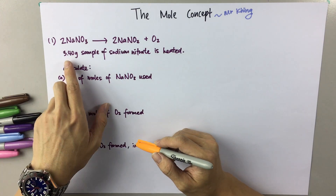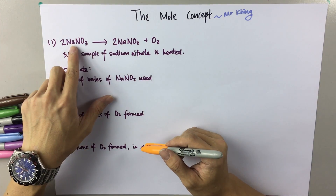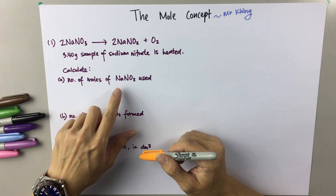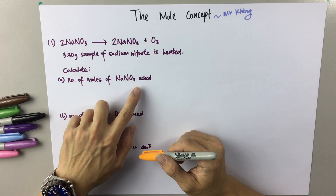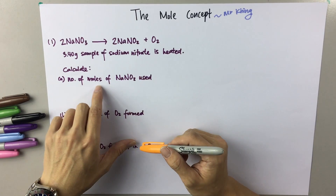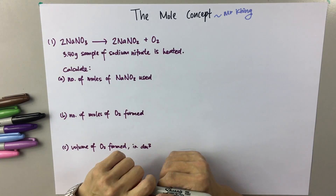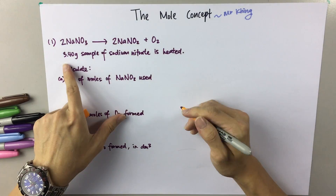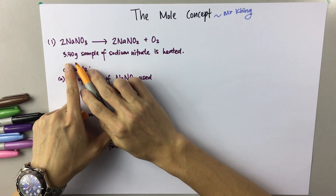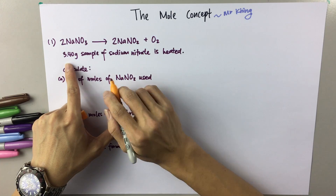Given the information: a 3.4 gram sample of sodium nitrate is heated. Calculate the moles of sodium nitrate used. So first, always remember, before you proceed with any question, always look for the information available. Based on this question, we are given the mass of sodium nitrate.